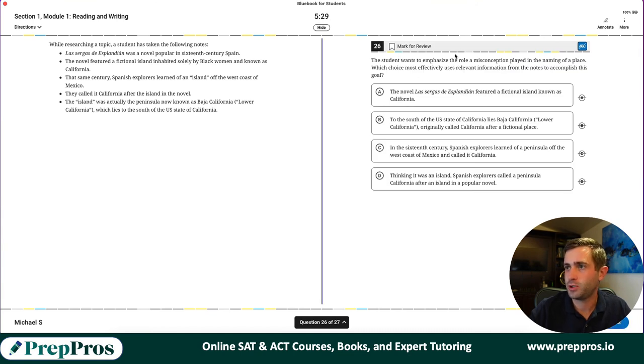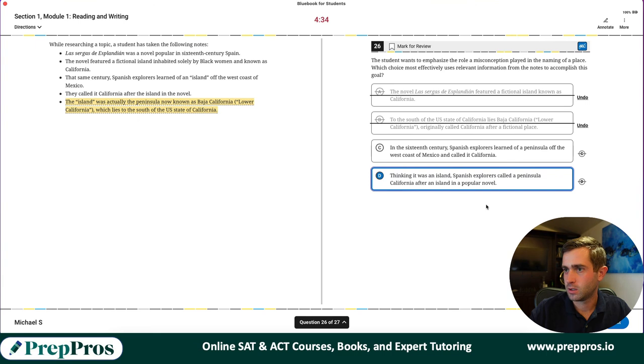The student wants to emphasize the role a misconception played in the naming of a place. So I'm reading and looking out for what I'm answering for. This is a novel that was popular in the 16th century. The novel featured a fictional island inhabited by black women and known as California. That same century, Spanish explorers learned of an island off the west coast of Mexico. They called it California after the island of the novel. The island was actually the peninsula now known as, which lies to the south of the U.S. state. Well, here is our misconception. That is the misconception there. Thinking it was an island, they called it the peninsula. That's our misconception.